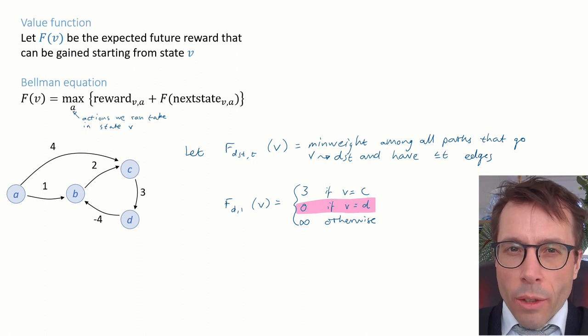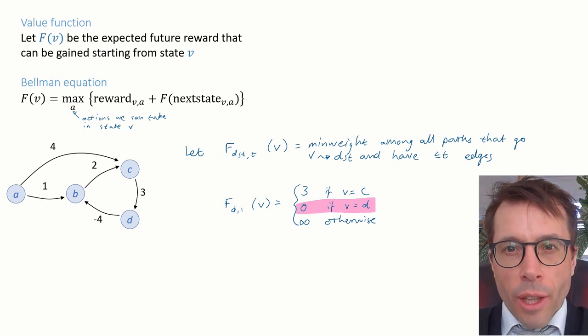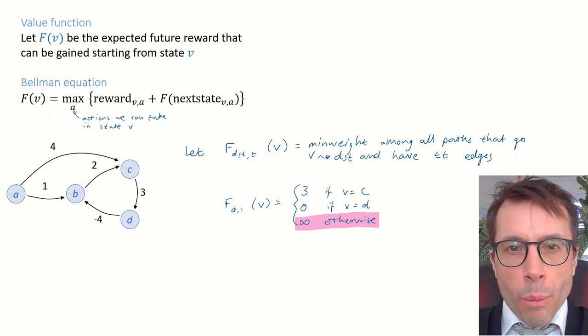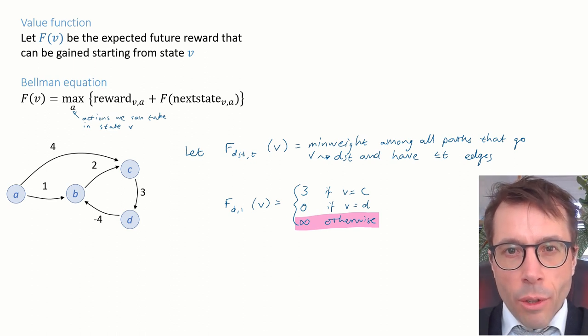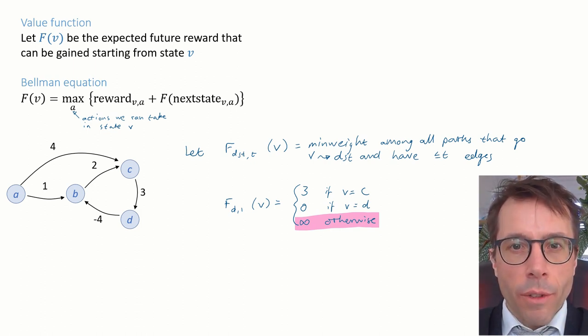The next case is a bit weird. What's the minimum weight among all paths that go from d to d and have at most one edge? Now the convention that we used before both for Dijkstra and for Bellman-Ford is to say that there's a sort of zero edge path from any vertex to itself which has weight zero, and that's what this case is referring to. And what about the minimum weight among all paths from b to d that use at most one edge? There aren't any such paths, so it's the minimum of an empty set and the only sensible value to assign it is infinity.